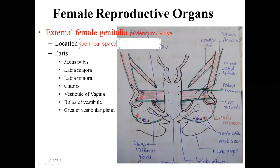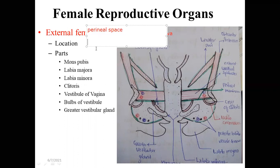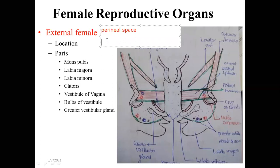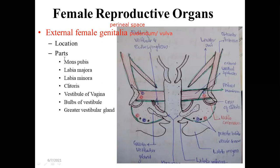In the perineal space, there are two divisions: deep and superficial. In the deep perineal space, you find the deep transverse perinei muscle, part of the urethra, and other vessels. In the superficial perineal space, you find the location of the pudendum. The perineum is the lower part of the trunk, lying in the interval between the two thighs, and this is where the external female genitalia are located.